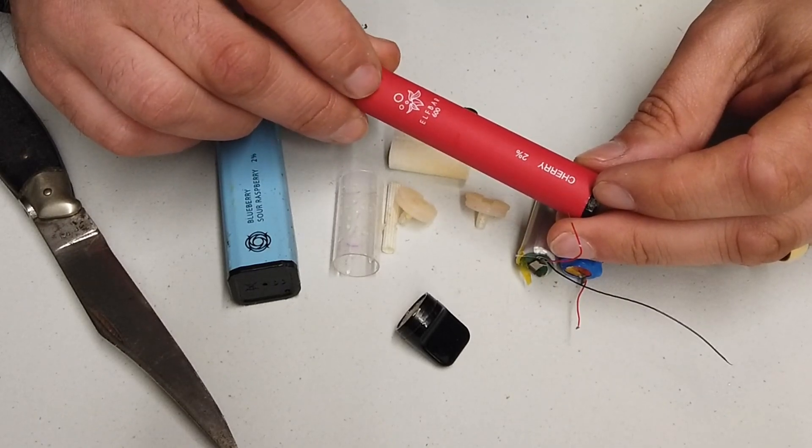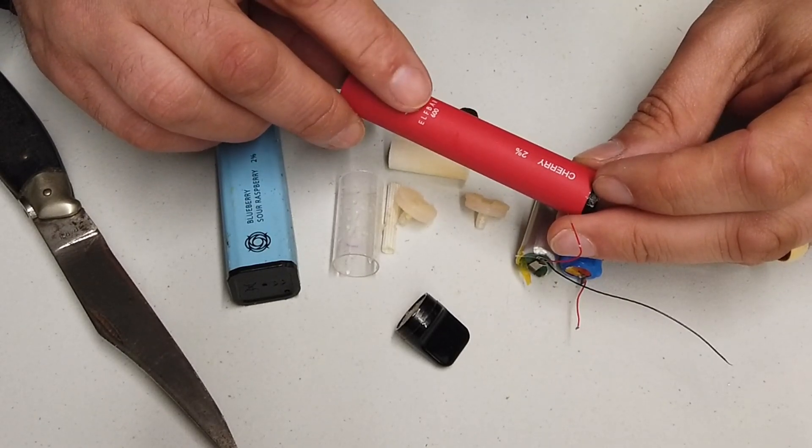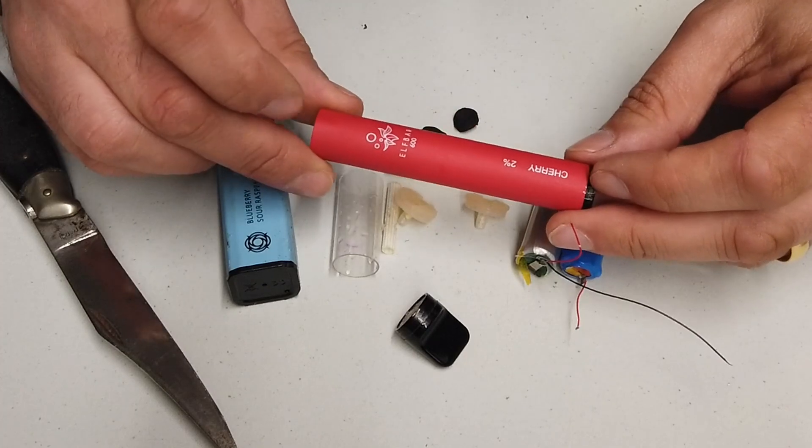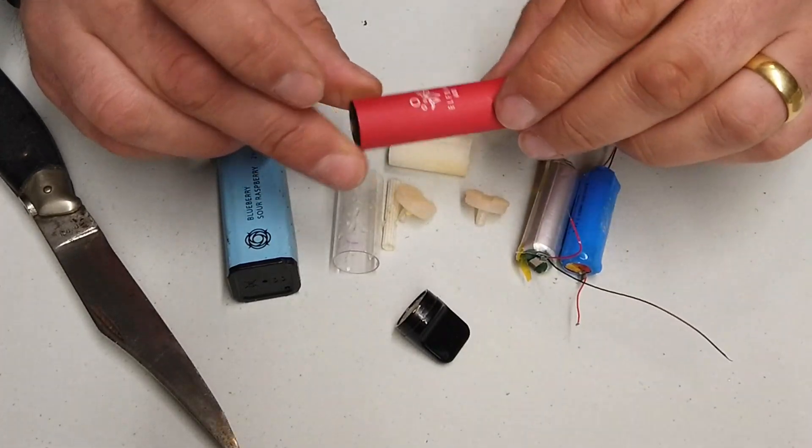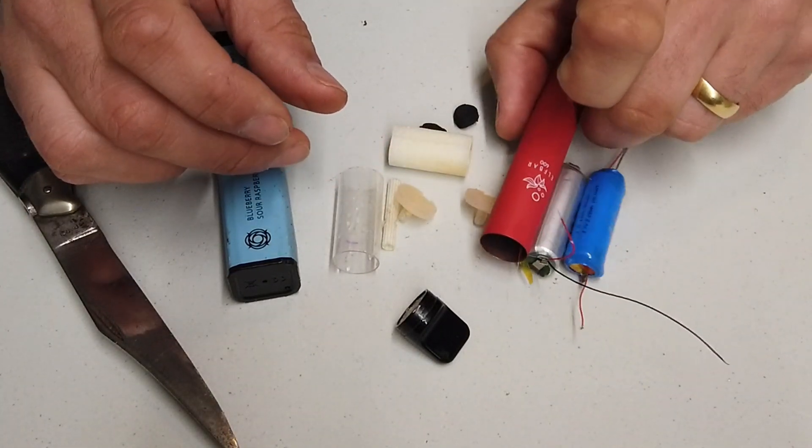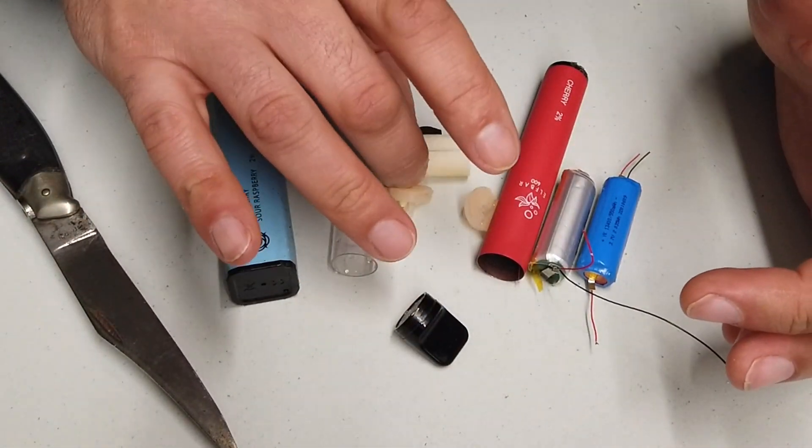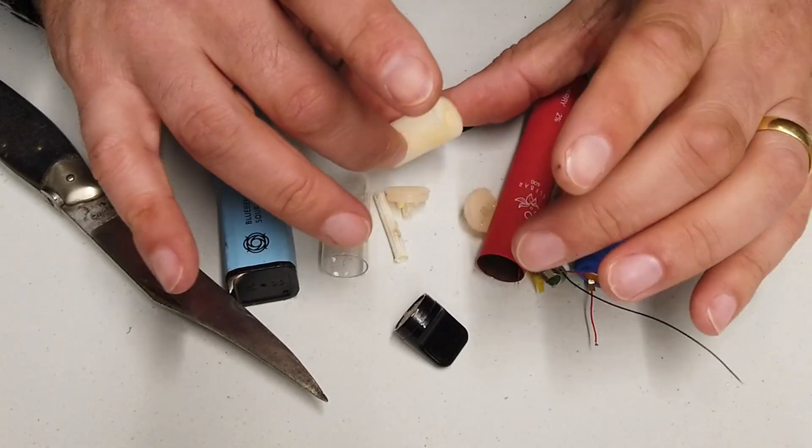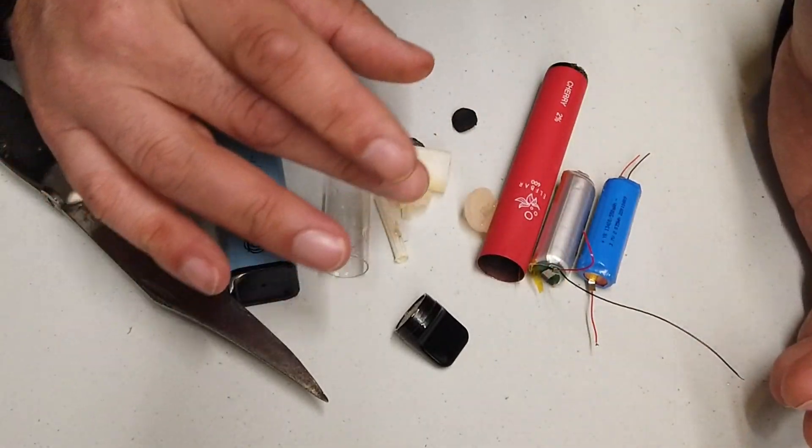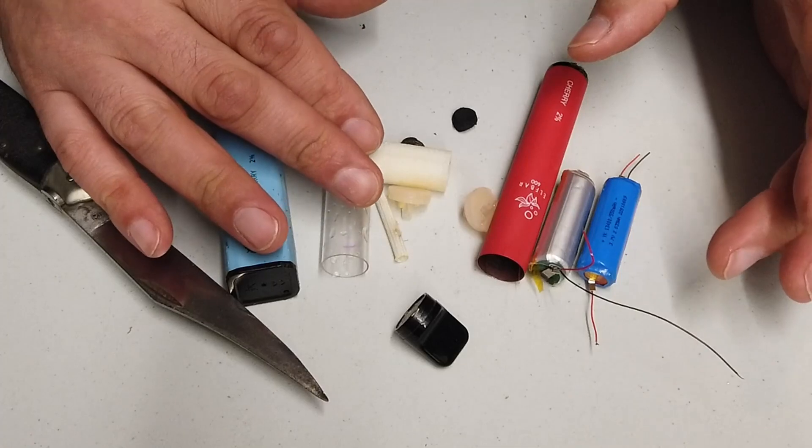It says 600 on the tube, so I'm assuming that's 600 tokes, 600 pulls on the thing. Right, let me just get rid of all of the junk. There's no, there's just no electronics. I don't understand how that works.